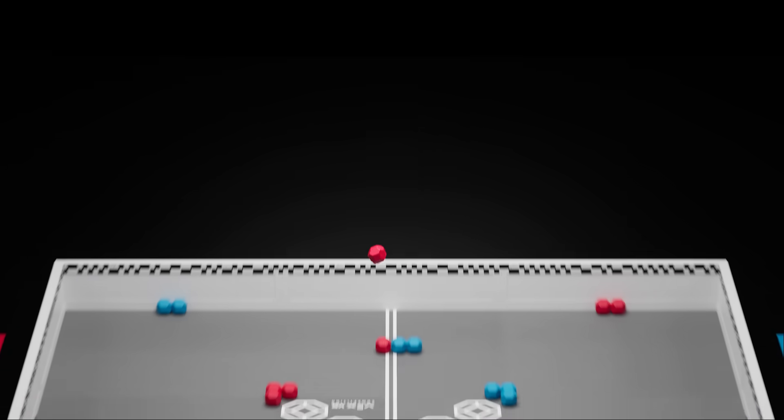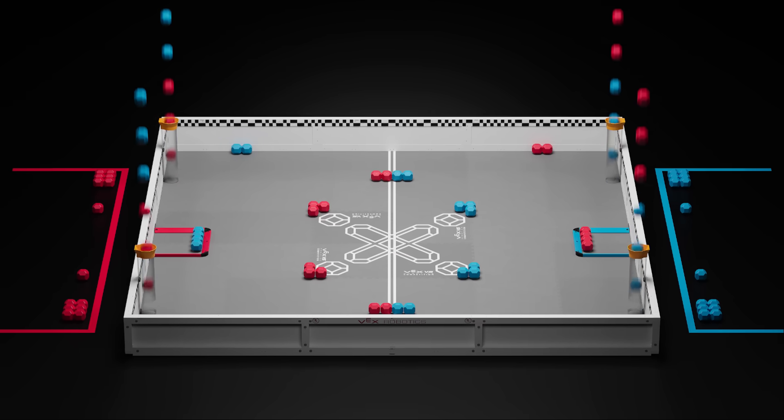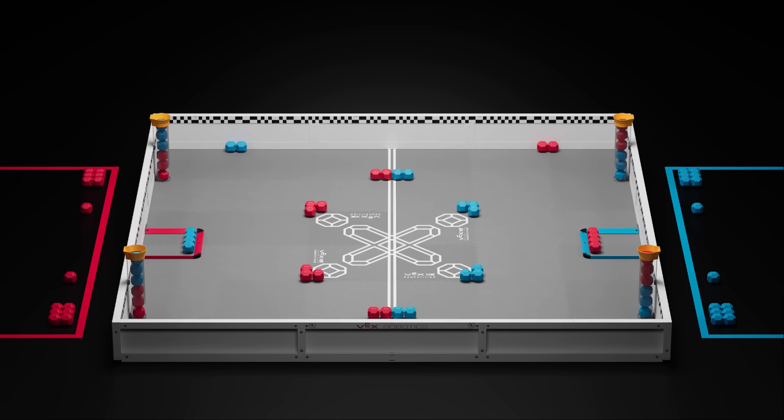Blocks can be obtained either from their field starting locations or from one of the four loaders that begin pre-populated with six blocks each, three of each color.